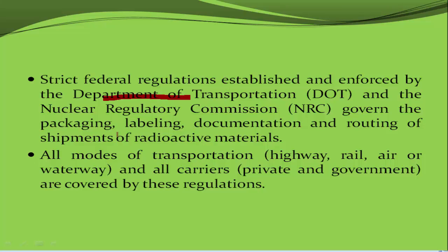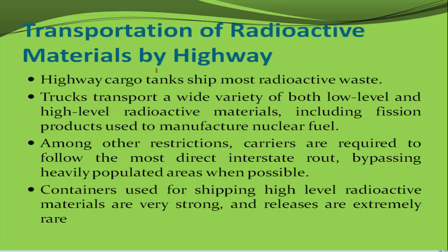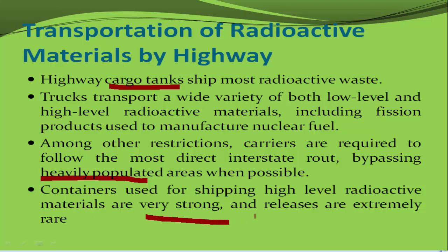All modes of transportation — highway, rail, air, or waterway — are covered by regulations. For highway transportation, radioactive waste is transported by trucks, carrying both low level and high level radioactive materials. Trucks must bypass heavily populated areas. The containers must be very strong and must not release any radioactive material even in the event of a road accident.